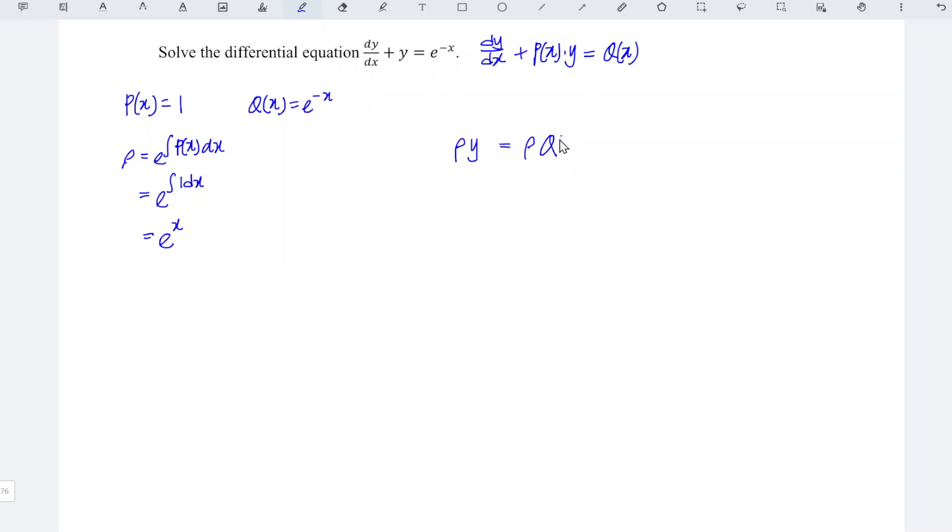When we differentiate the left hand side with respect to x, we substitute integrating factor which is e to the power of x, equals e to the power of x, while q(x) is e to the power of negative x, which equals 1 over e to the power of x.